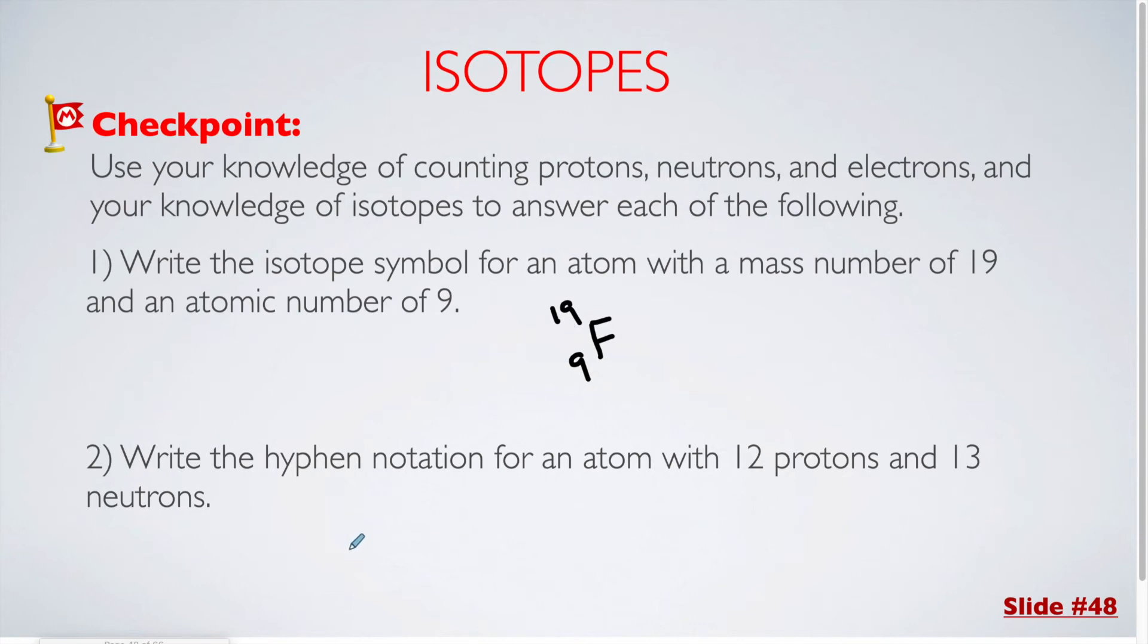Number 2, we are trying to determine the hyphen notation. This is where we are going to write out the entire name of the element, a hyphen, and then the mass after it. 12 protons means an atomic number of 12, so the name of that element is magnesium. Then, we're going to include our hyphen. From here, we need the total mass. We have not been given the mass number. I do know I have 12 protons and 13 neutrons, so I'm going to add those together for a total mass of 25.